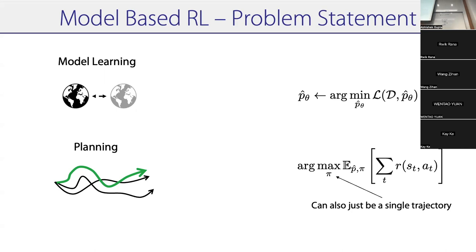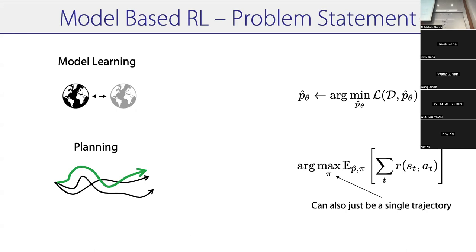Your reward function is based on the state, but your state transitions are based on the learned model. The assumption in most model-based RL is that your reward function is known as a function of state. It's just how you transition between states that is a learned function because you don't have a simulator. There are newer approaches that also learn the reward function from data and then plan with the learned reward and learned transition.